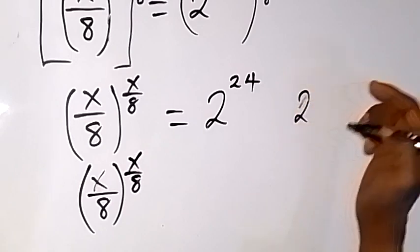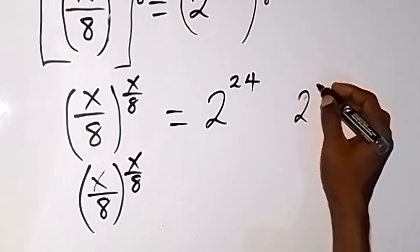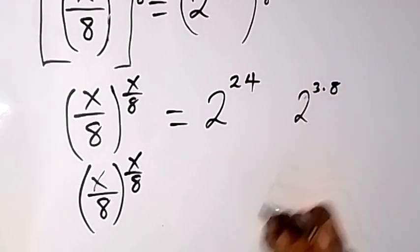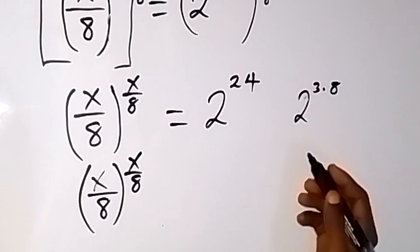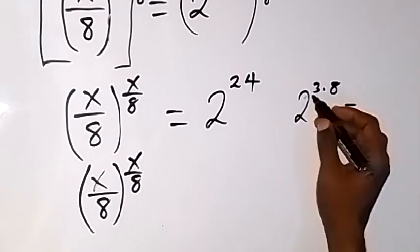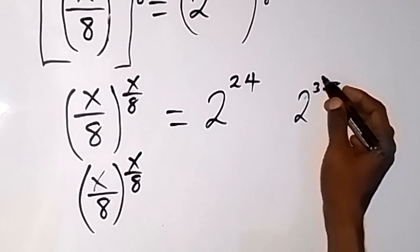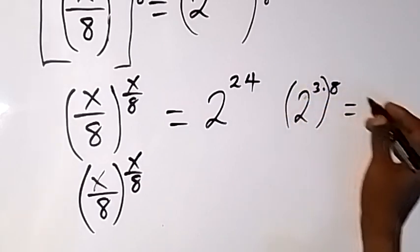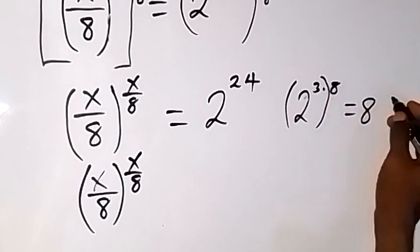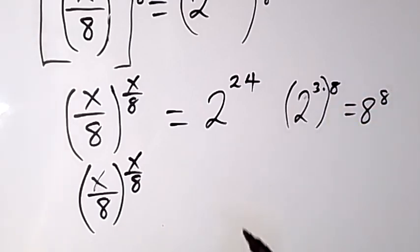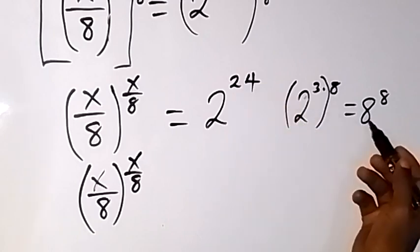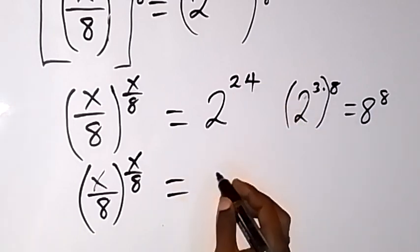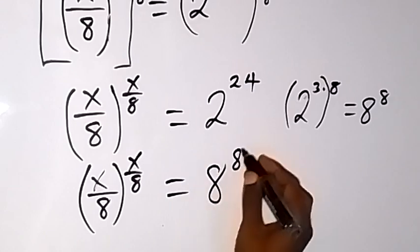From here we can write 2 raised to power 24 as the same thing as 2 raised to power 3 times 8, because 3 times 8 is 24. So this will become, when we separate it and bring it out, 2 raised to power 3 — that's 8 — then raised to power 8. So we can write 2 raised to power 24 as 8 raised to power 8.